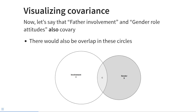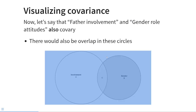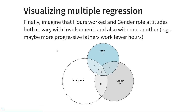Now let's say there is a third variable: gender role attitudes — how progressive a father is about the distribution of tasks in child rearing. We can assume that gender role attitudes also co-varies with involvement with the child, so there would be overlap between those circles too. Again, the area labelled C represents the covariance between gender role attitudes and involvement with the child. Multiple regression can be visualised by putting all of those bubbles together, where hours worked and gender role attitudes both co-vary with hours of involvement with the child and also co-vary with one another.